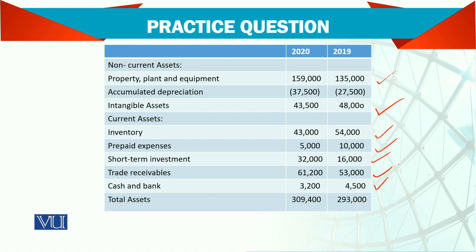Look here at the cash and bank balance: opening balance is 4,500 and closing is 3,200, which means that in the whole year there is a drop in cash of 800. These figures are in thousands.